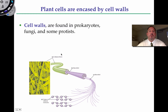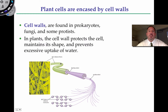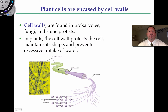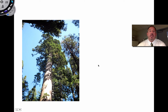Plant cell walls are primarily made up of sugars and a few proteins. The polysaccharide primarily responsible for the plant cell wall is cellulose, and you can see it here with the scanning electron microscope. Plants have cell walls to protect them and maintain their shape — it surrounds the membrane on the outside of the cell, and it prevents excessive uptake of water.